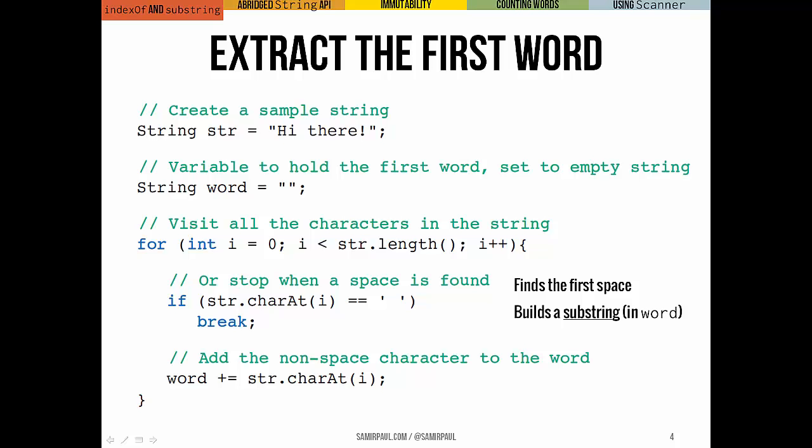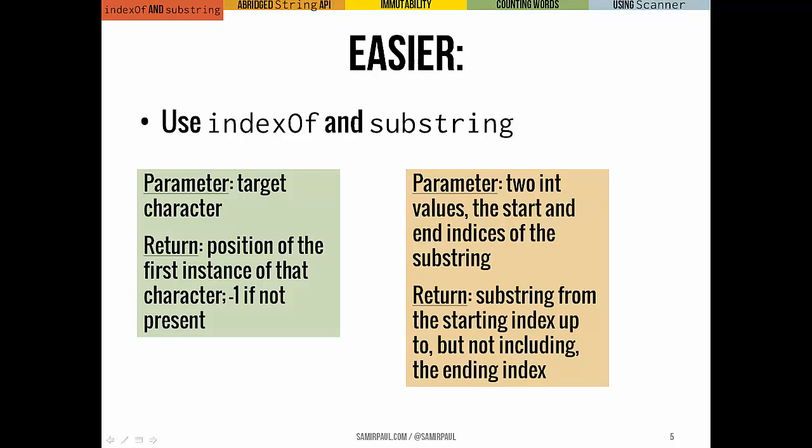This code combines these two tasks of finding the first space character and building a substring of the original string. We can actually solve this in a much easier way if we just use two separate string methods designed for those tasks. The first one is called indexOf. indexOf expects the target character as a parameter and it returns the position of the first instance of that character, or negative one if that character doesn't appear at all. The second method, substring, expects two integer parameters that tell us the starting and ending positions. It returns a substring that runs from the starting position up to but not including the ending position.